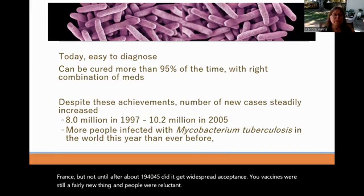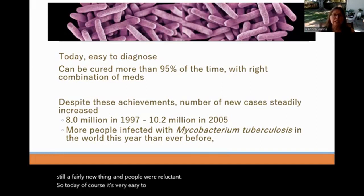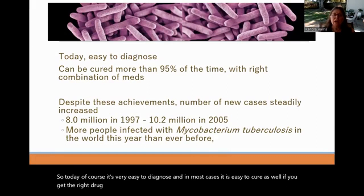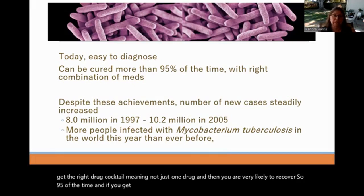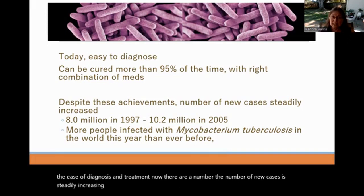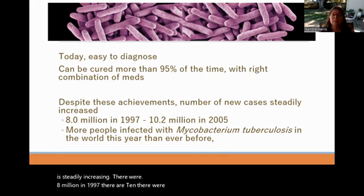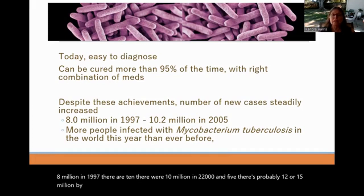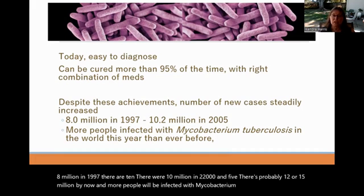Today, it is very easy to diagnose and in most cases easy to cure as well, if you get the right drug cocktail — not just one drug. You are very likely to recover 95% of the time. And if you get the latent version, you won't get sick anyway. But despite the ease of diagnosis and treatment now, the number of new cases is steadily increasing: 8 million in 1997, 10 million in 2005, and probably 12 to 15 million by now. More people will be infected with mycobacterium tuberculosis this year than ever before.